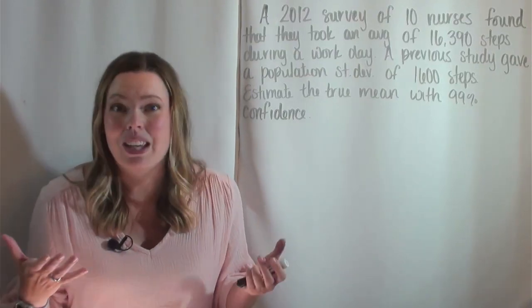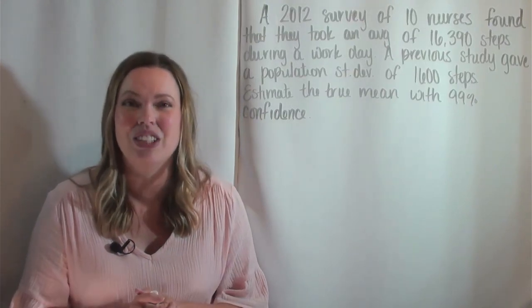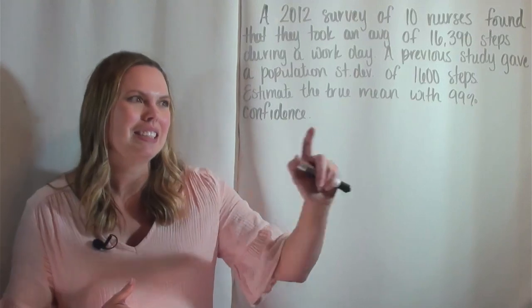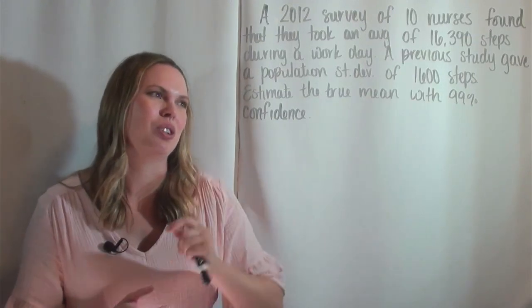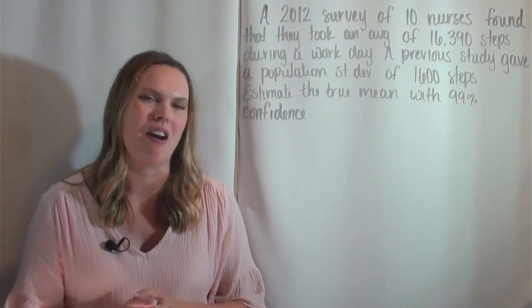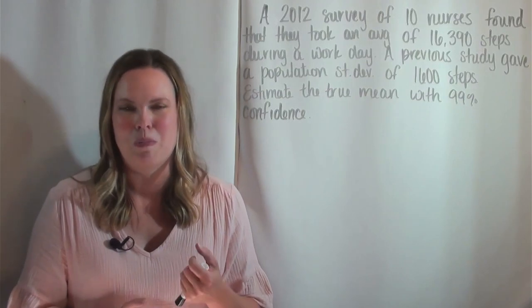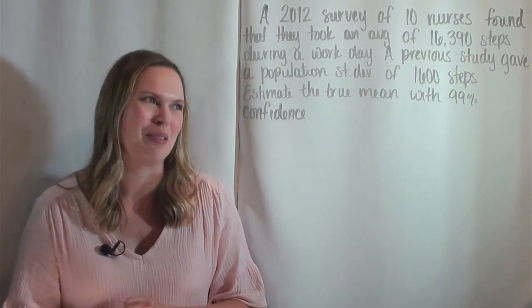Why is this problem, like if you're just reading this problem, why do we know that we need to construct a confidence interval here and how do we know that sigma is known? Well this last sentence tells us confidence interval. It says to estimate the true mean with 99% confidence. That tells you that you need to be building a confidence interval for mu, the mean, or the true mean, or the mean of the population.